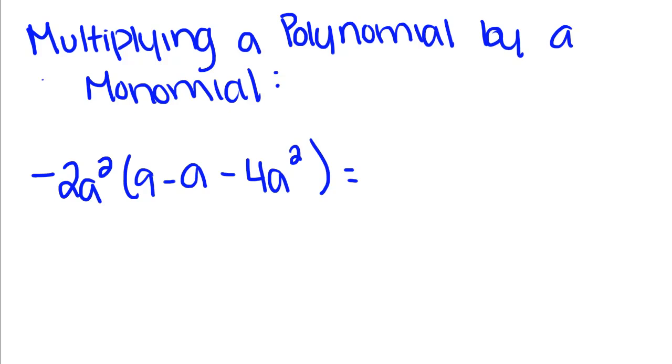If you remember, a polynomial is an expression with many terms and a monomial only has one term. We've talked about this property before. It's called the distributive property and that's how we are going to multiply the polynomial by the monomial.